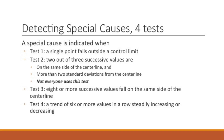The first test is a single point that falls outside the control limit — either the upper or the lower control limit. The second test is two out of three successive values that are on the same side of the center line and more than two standard deviations from the center line. Not everyone uses this test depending on the resource you use. The third test is eight or more successive values falling on the same side of the center line.